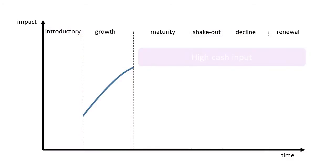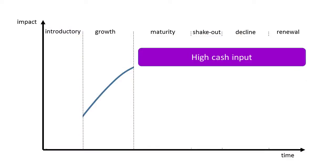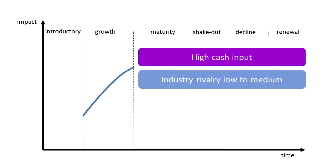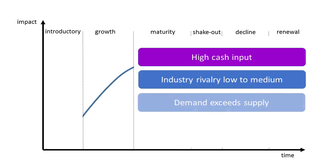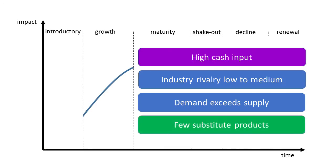Industries in the growth phase are often using a lot of cash to further develop their products and services and expand their businesses. Demand should still exceed supply, and industry rivalry is not yet high. Substitute products may have emerged, but have not established themselves yet, and so the players in the industry are able to increase profitability.